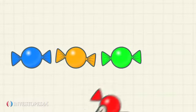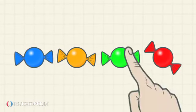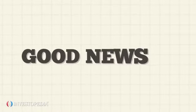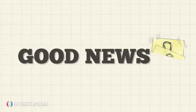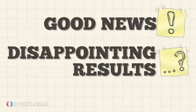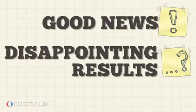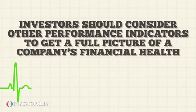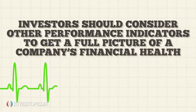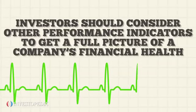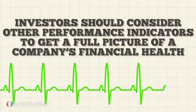Companies can change items in their EBITDA calculations for each reporting period in order to make good news sound better and put a positive spin on disappointing results. For this reason, investors should consider other performance indicators to get a full picture of a company's financial health.